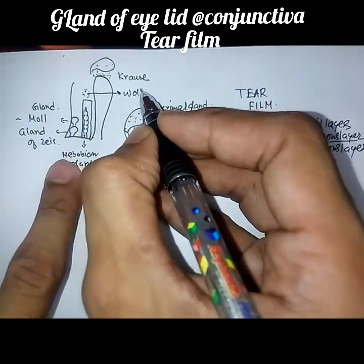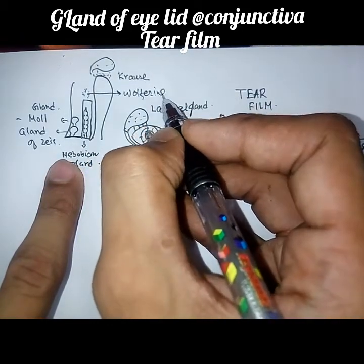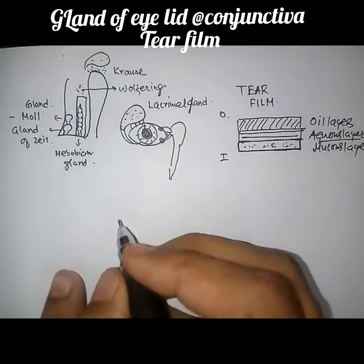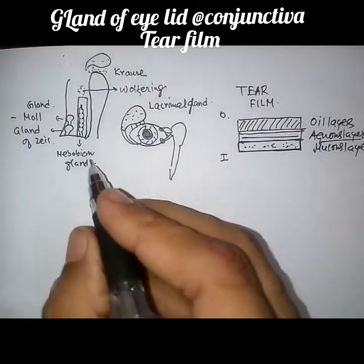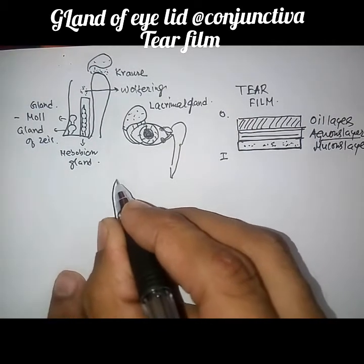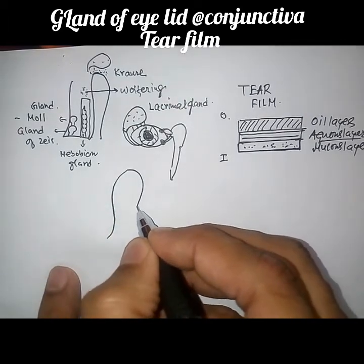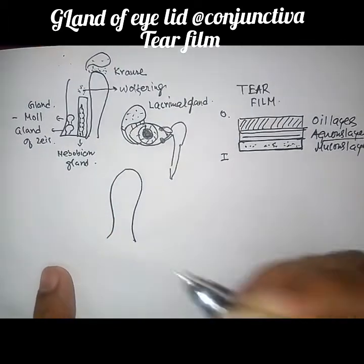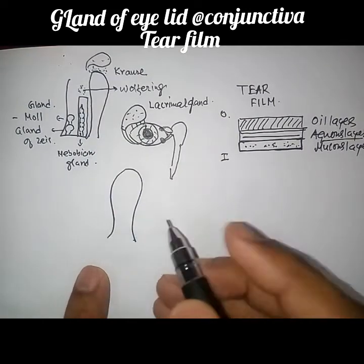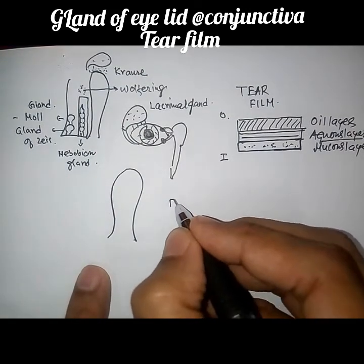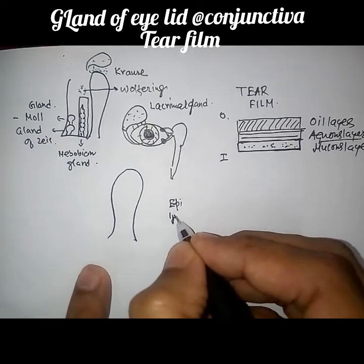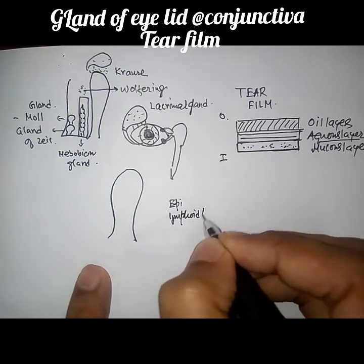If we draw the conjunctiva, there is the palpebral conjunctiva, the fornix, the bulbar conjunctiva, and the limbal conjunctiva. The conjunctiva has three layers: the outer epithelial layer, the middle lymphoid or adenoid layer, and the inner mucosal layer.